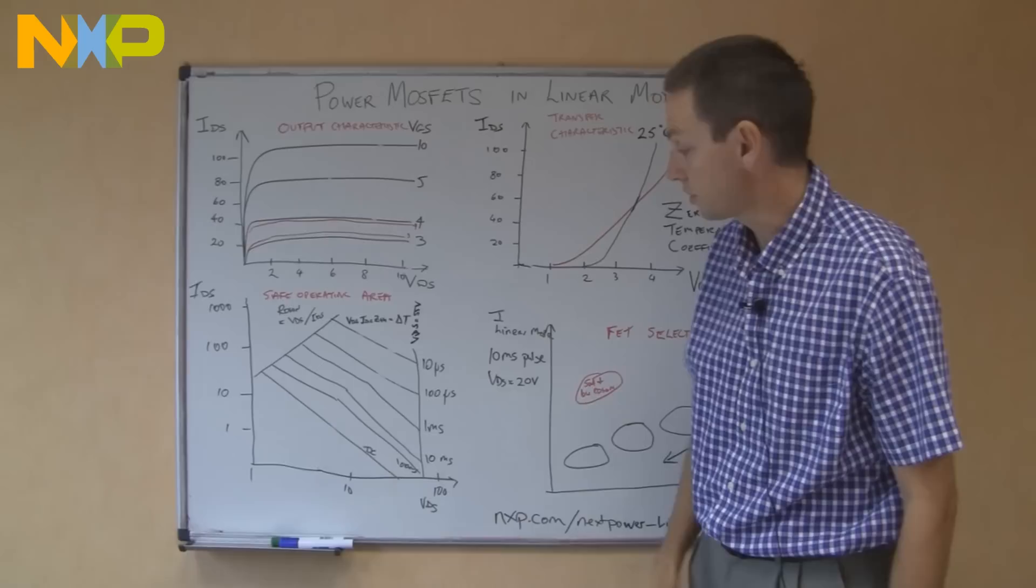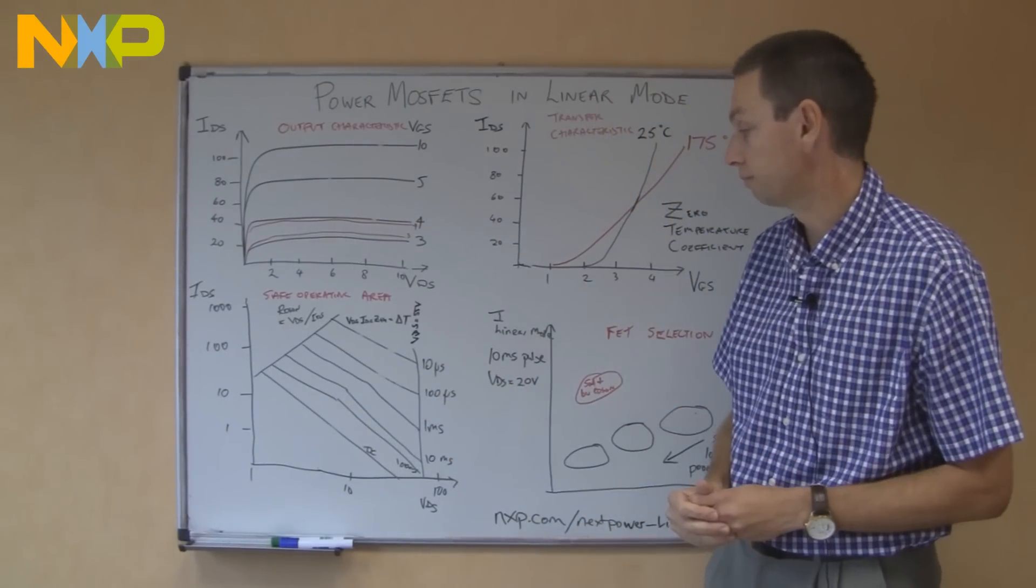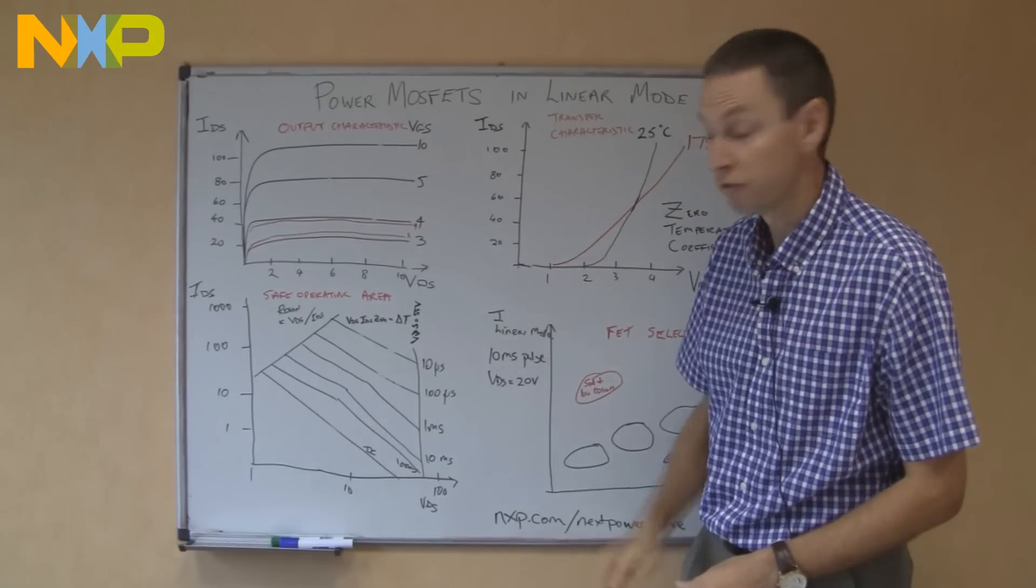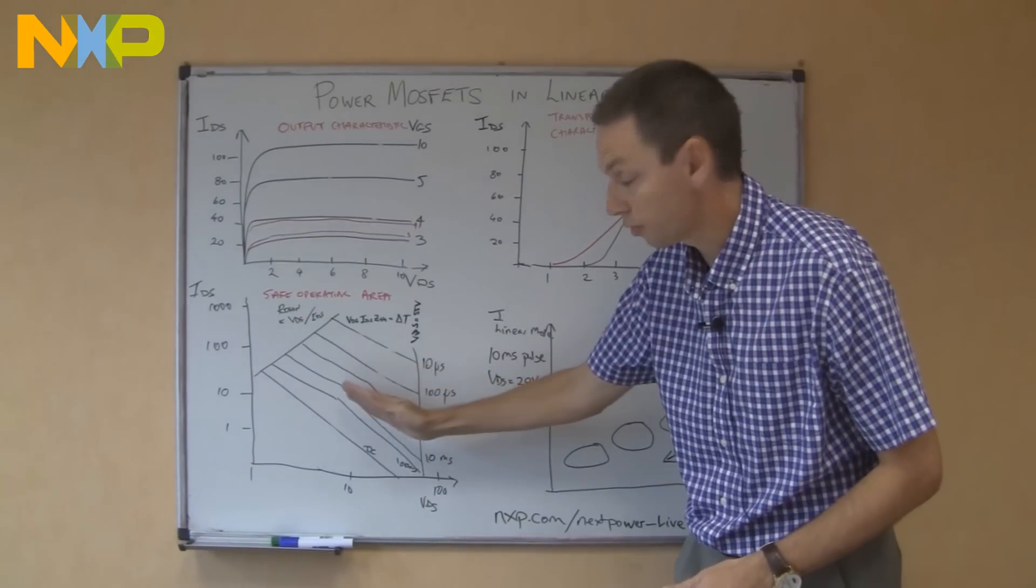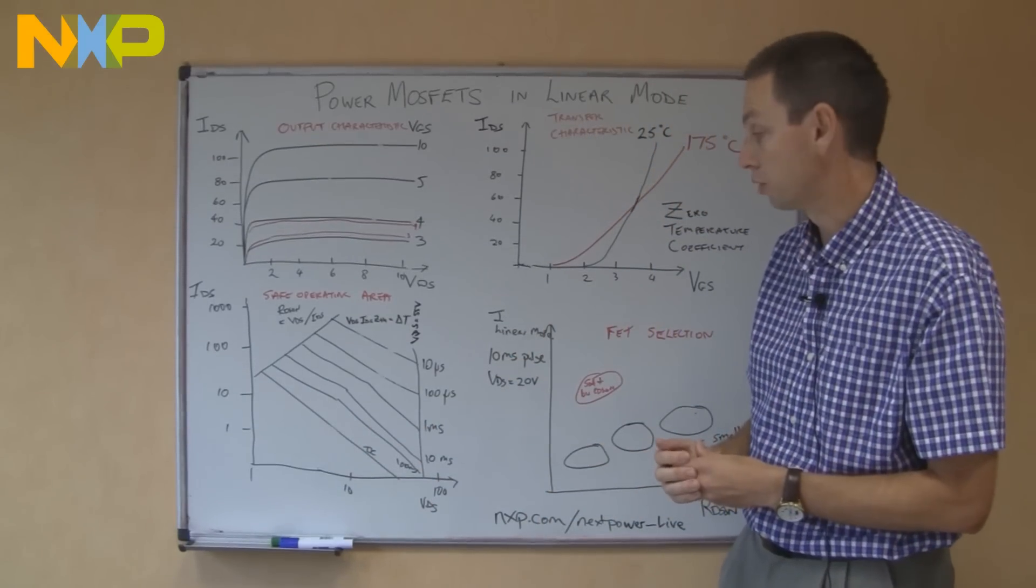That basically says, for safe operation, you've got to apply less current than what you would have just purely thought by the simple linear relationship. But if you follow this characteristic, if you always stay below those lines, your MOSFET will have safe operation. Unfortunately, for modern technologies, the safe operating area curve has got smaller and smaller and smaller, because of the instability in the linear mode.